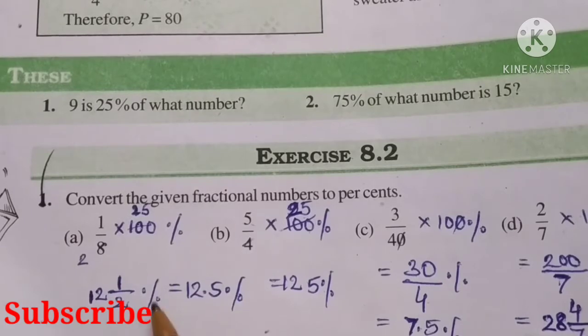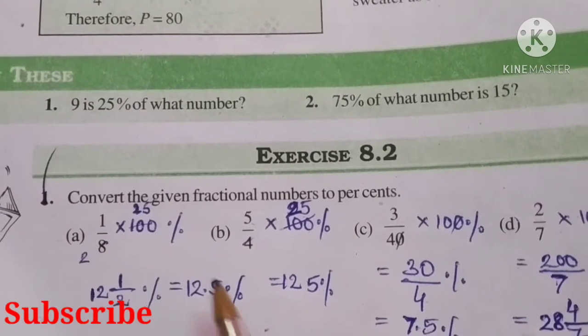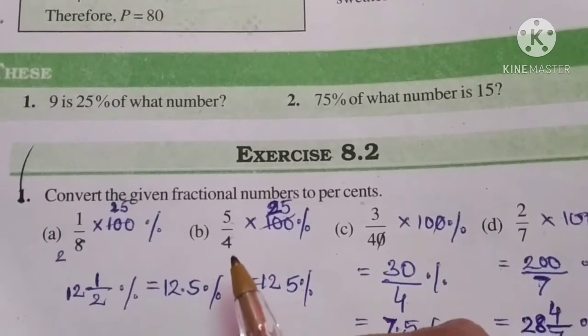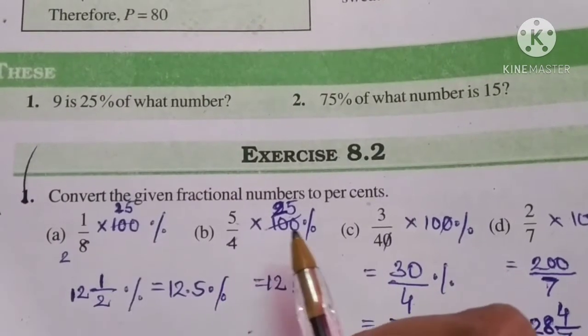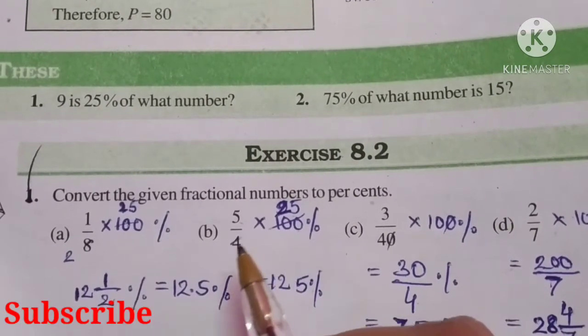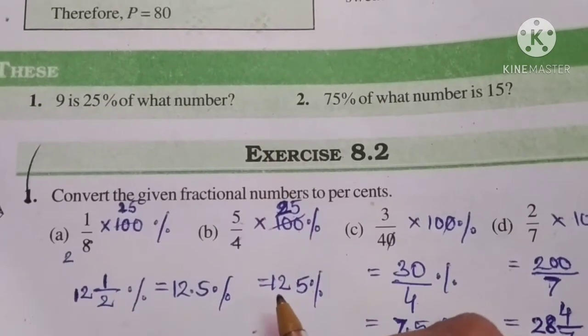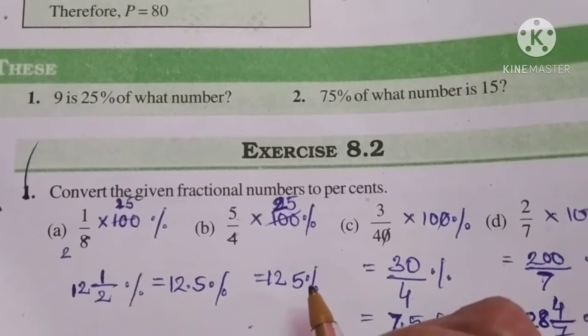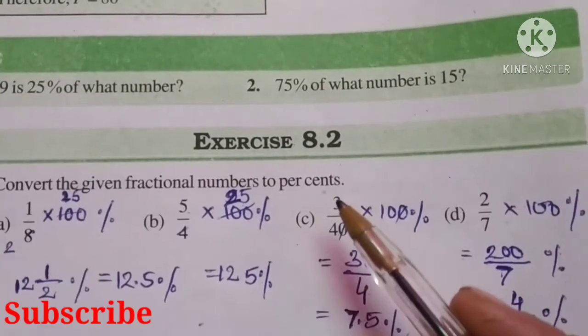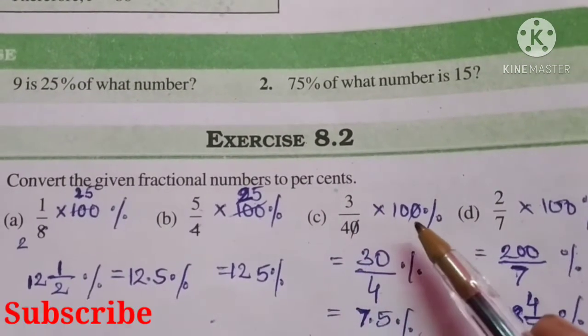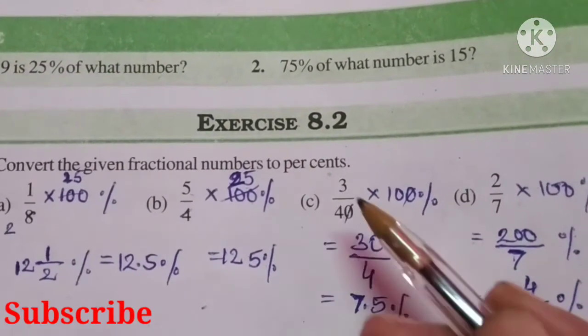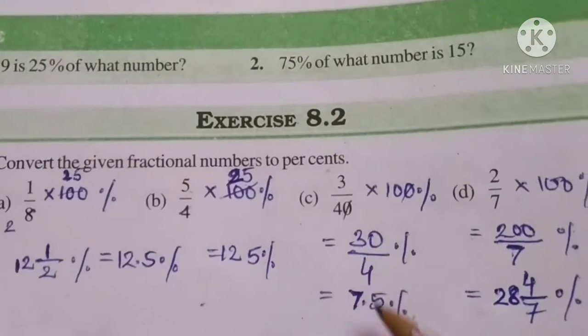That is equal to 12.5 percent. Part (b): 5/4, multiply by 100 percent, we get 500/4, which is 125 percent. Part (c): 3/40 times 100 percent, we get 30/4, that is 7.5 percent.